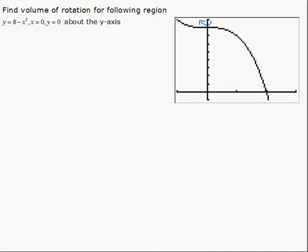We can draw a rectangle dx or dy will work. Choosing dx here, this is parallel to the axis of rotation. This is zero, this point here is two comma zero. dx parallel means shell.